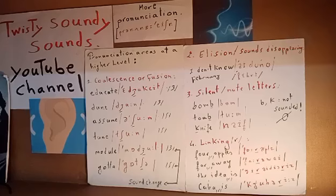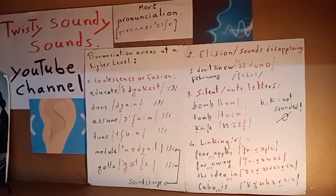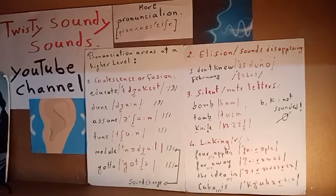In this video I have covered with you four pronunciation areas at a higher level: coalescence or fusion, like 'gotcha' or 'June'; elision, like 'February'; silent letters, like 'tomb'; and linking R, like 'four apples.' In the coming video I will cover also some other pronunciation areas that native speakers tend to use at a higher level. Thanks for watching and goodbye.